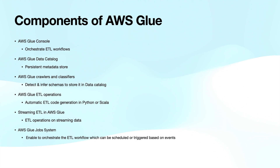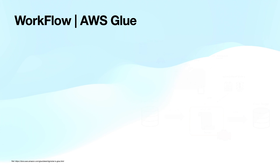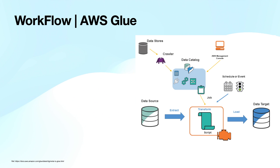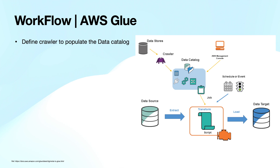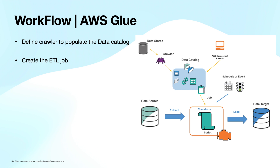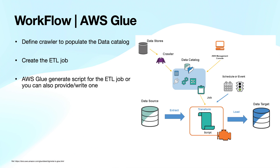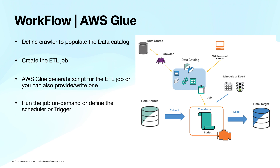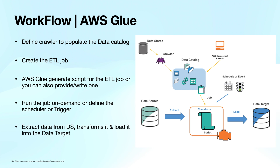Let's see how these components work together. The Data Catalog sits in the center and all other components revolve around it. The first step is to define the crawler that will scan data, then detect and infer the schema to populate the Data Catalog. As the next step, create the ETL job which will use the Data Catalog to generate the ETL script, which you can also modify as per requirement. You can run the ETL job on demand, schedule it, or define a trigger. Finally, the ETL job will run, extract the data from the data source, transform it, and load it into the data target.